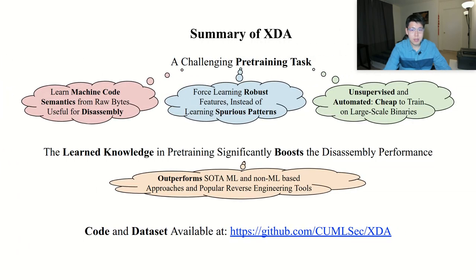In summary, this paper introduces XDA, a new disassembler based on transfer learning. It introduces a novel pre-training stage to train the model to learn machine code semantics before training it to perform downstream disassembly tasks. We have intuitively and empirically shown that such a pre-training strategy helps the model learn effective and robust features, instead of learning spurious and brittle patterns. Moreover, since the pre-training task is fully unsupervised and automated, it significantly saves the expensive manual effort in maintaining heuristics, and can be cheaply trained from large-scale binaries. We have empirically demonstrated our approach is effective, outperforming the state of the arts by a large margin. Finally, we have made the code and dataset public. Thank you.